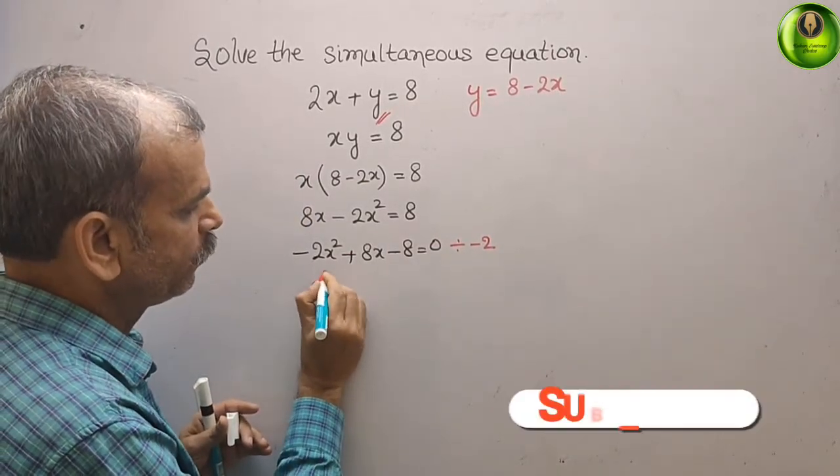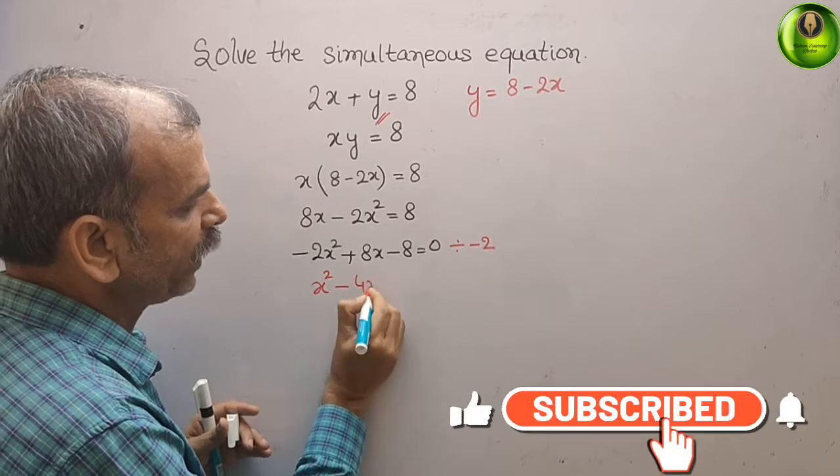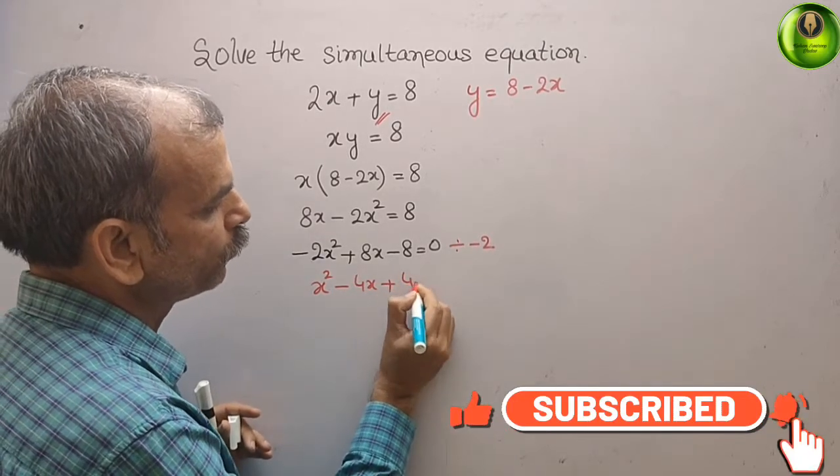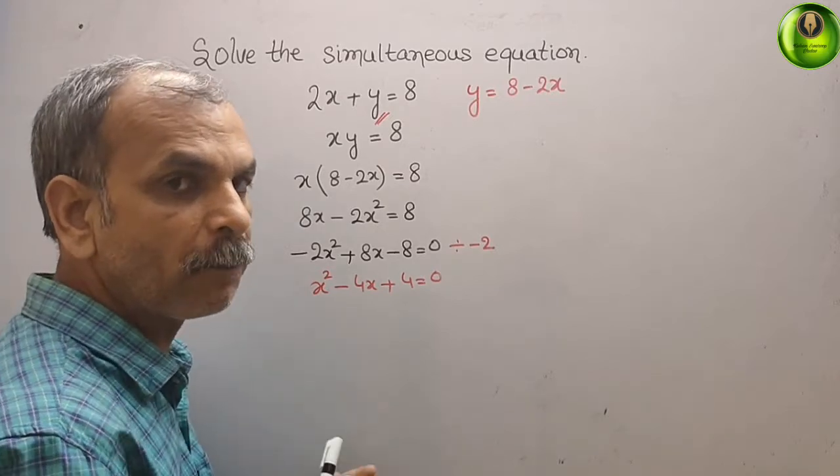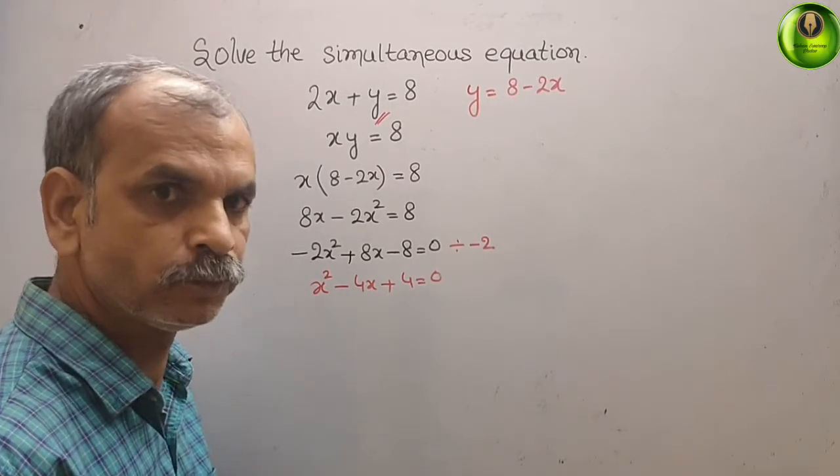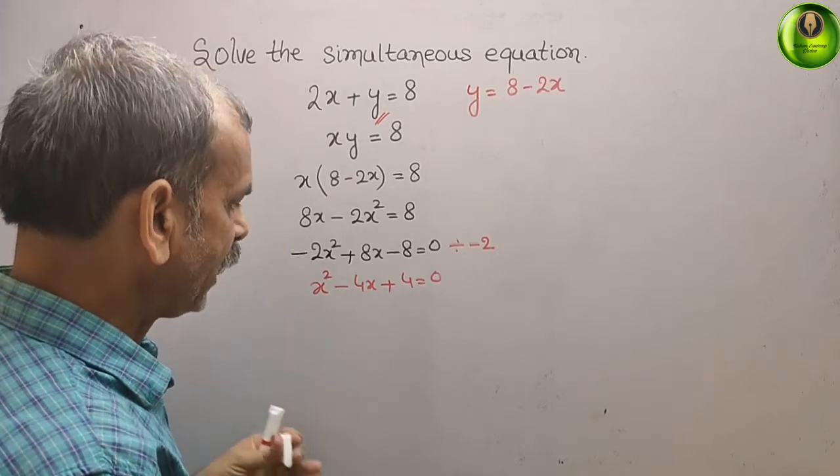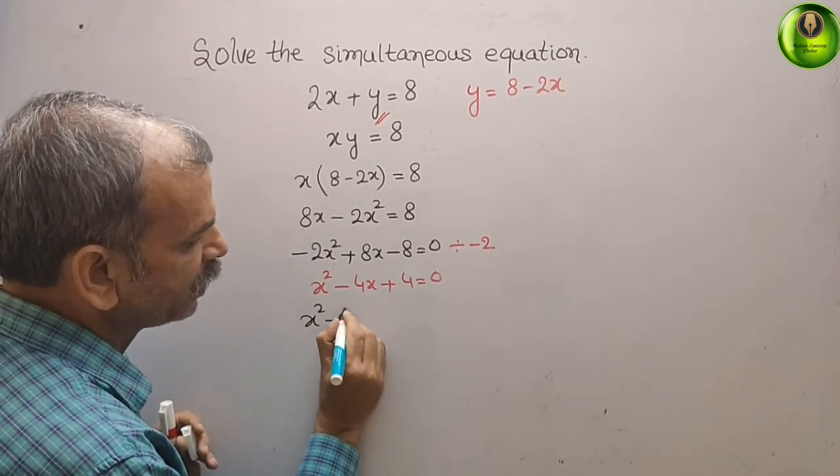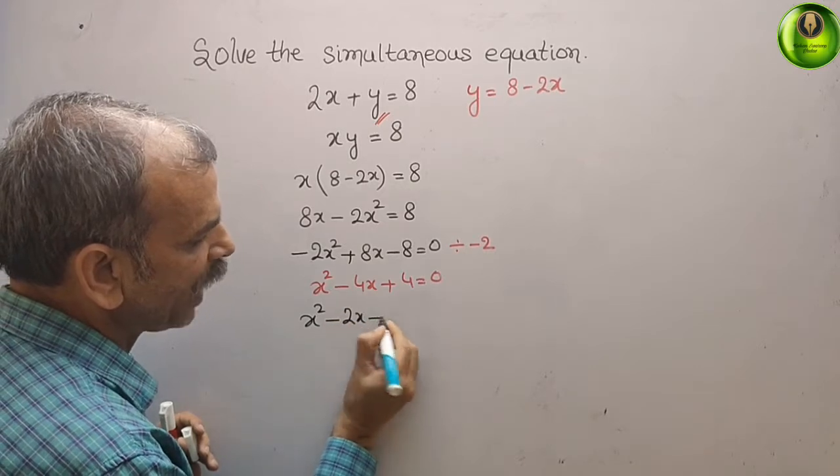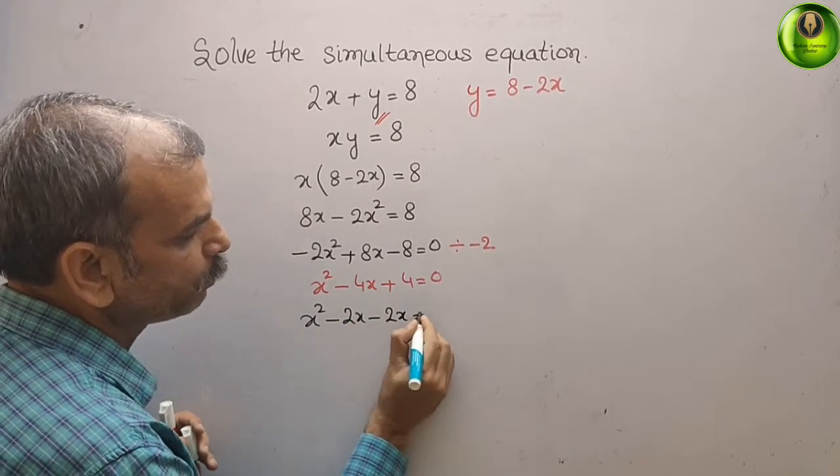We get x square minus 4x plus 4, that is equal to 0. Now we will go for middle term splitting, 2 into 2. So that is equal to x square minus 2x minus 2x plus 4.